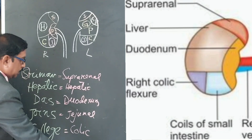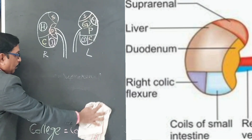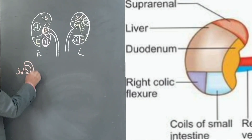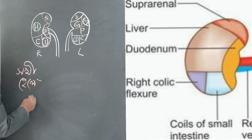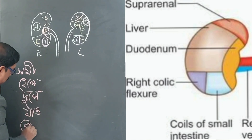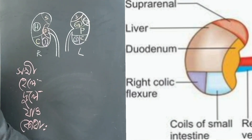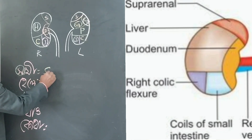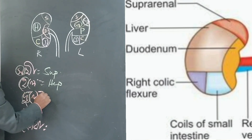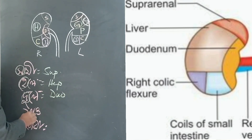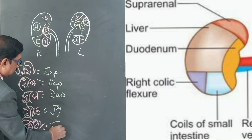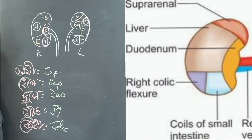Another way to remember, particularly for Bengali-knowing students: Shokhi, Hele, Dule, Jao, Kotha. Here, Shokhi means S for suprarenal; Hele means hepatic; Dule means D for duodenum; Jao means J for jejunum; and Kotha means C for colic. You can remember it this way, particularly for Bengali-knowing students.